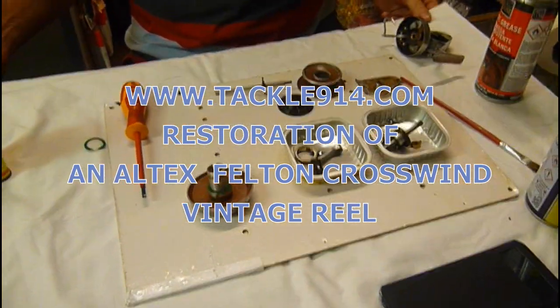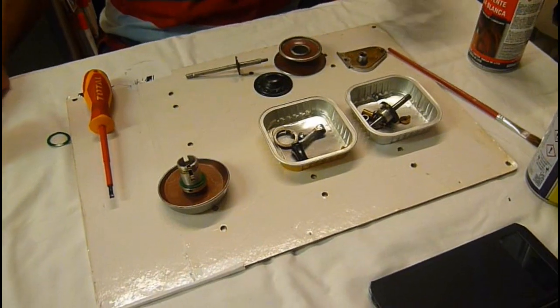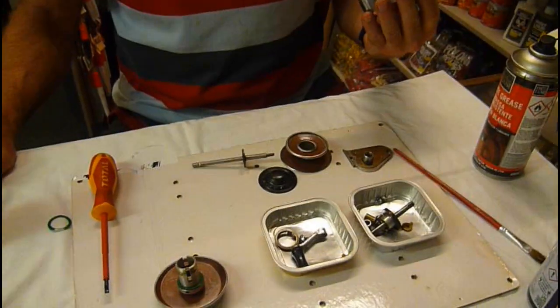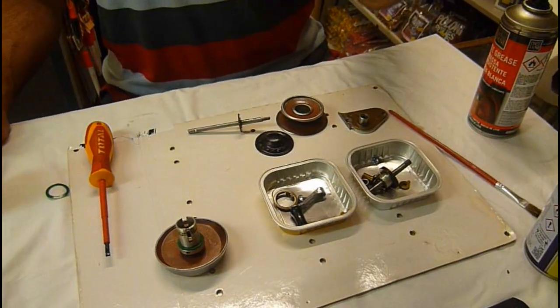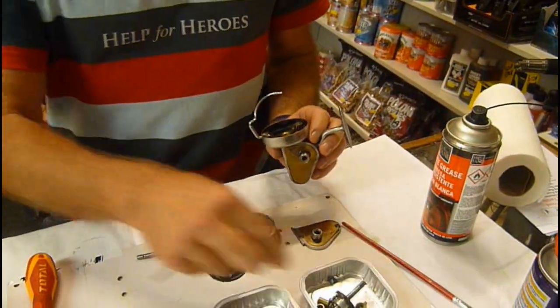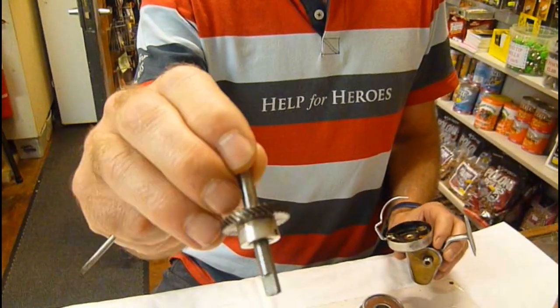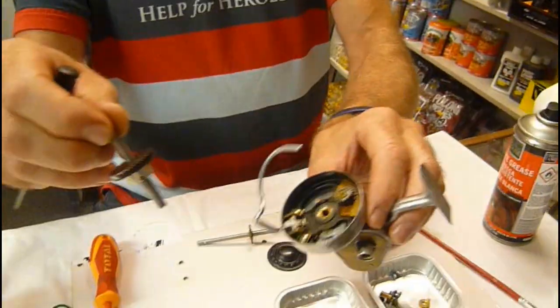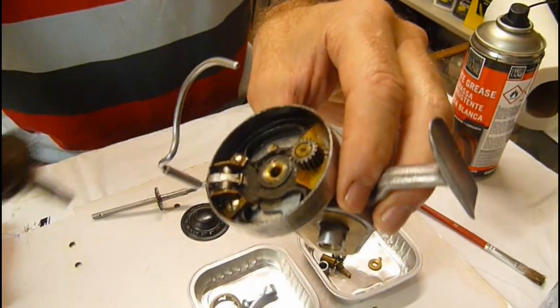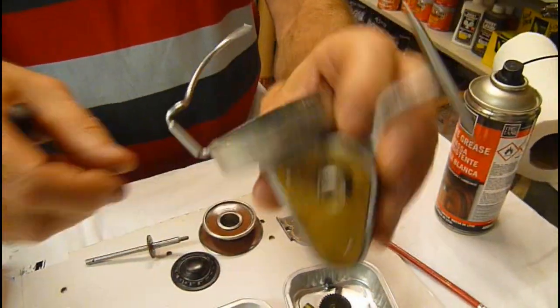Here we are at 914 Tackle, doing a service on a wonderfully designed half-bale Felton Crosswind. The later types had fiber gears which unfortunately do strip, but the early one, which can be denoted by its black color, has all metal. These are bulletproof, absolutely wonderful engineering.